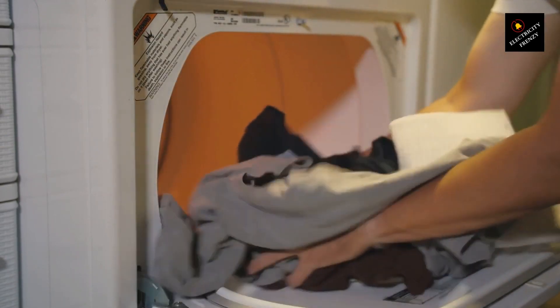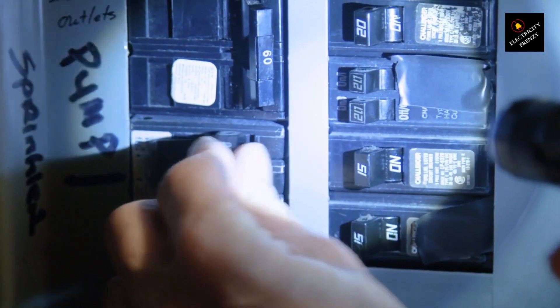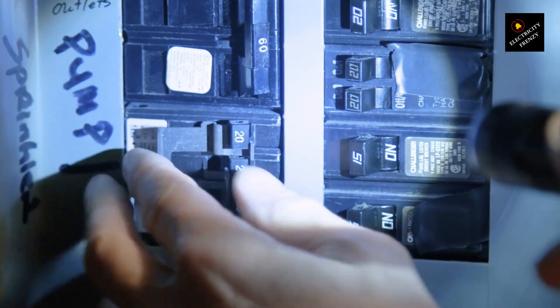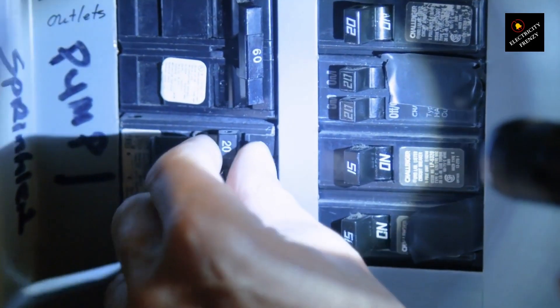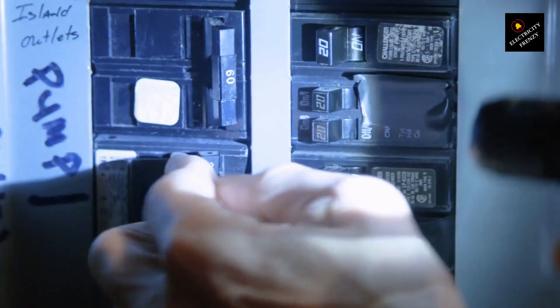Faulty wiring or loose connections. Loose electrical connections or faulty wiring in the circuit can generate resistance, resulting in heat buildup. This excess heat can trigger the circuit breaker to trip as a safety mechanism. Inspect the wiring connections in the circuit, ensuring they are tight and secure.